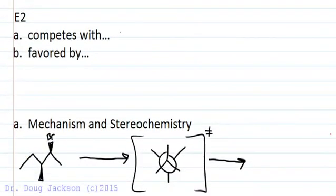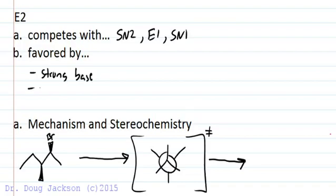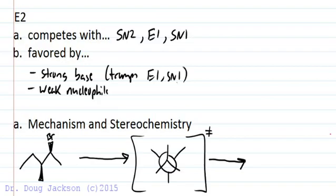For an E2 reaction it competes with SN2, E1, and SN1. So it's in competition with all three. It will be favored by a strong base and a weak nucleophile. But this strong base trumps E1 and SN1 because it takes so long to form a carbocation with E1 and SN1 that if we have a strong base, such as a charged base, they'll be in competition with SN2 by the factors that we've saw.